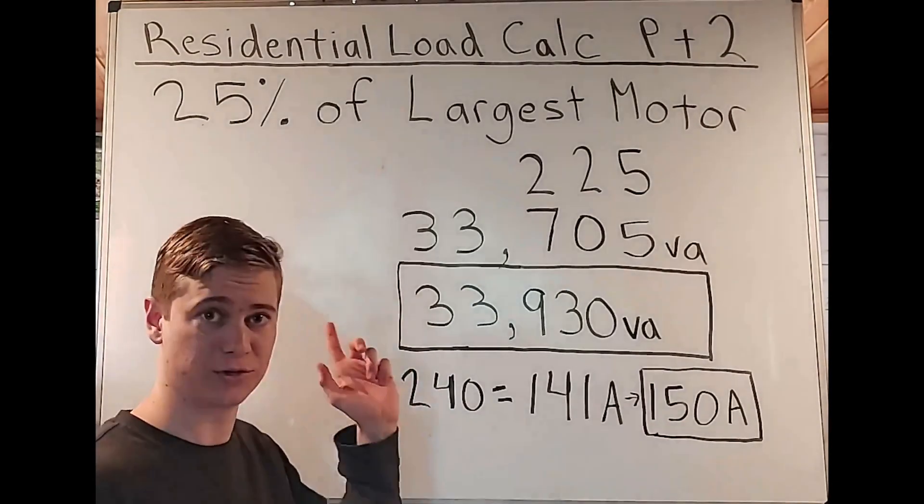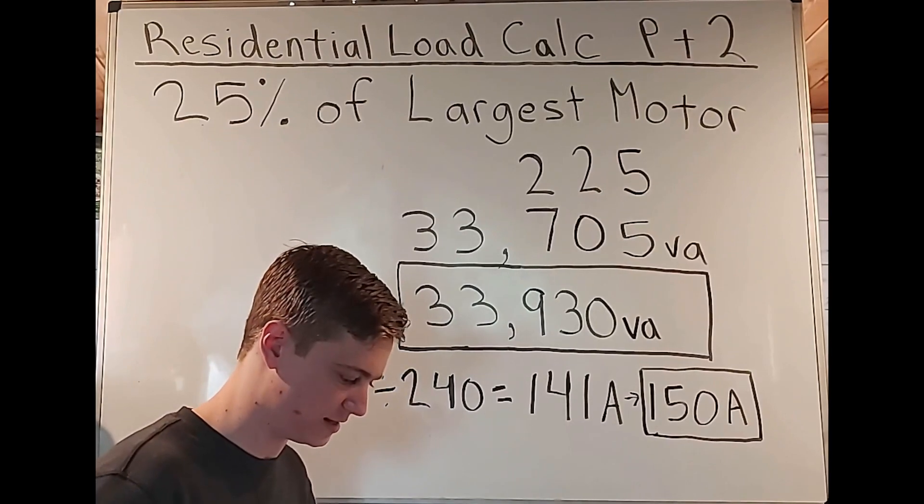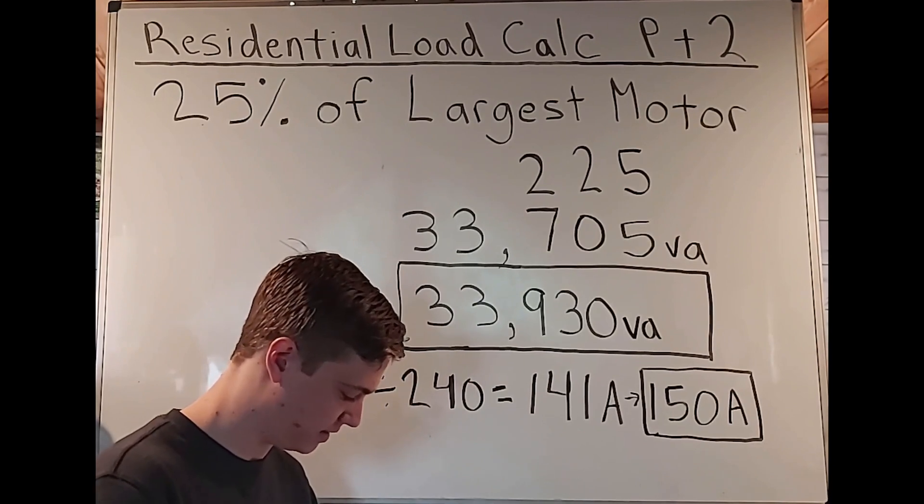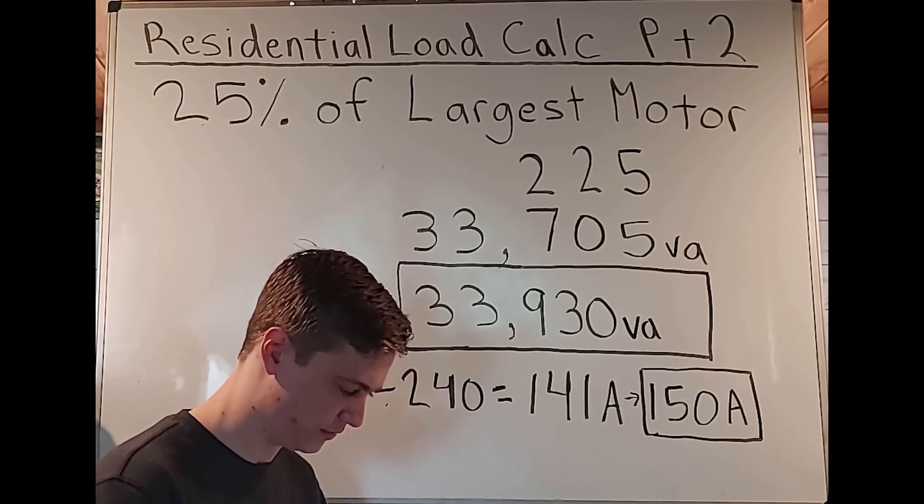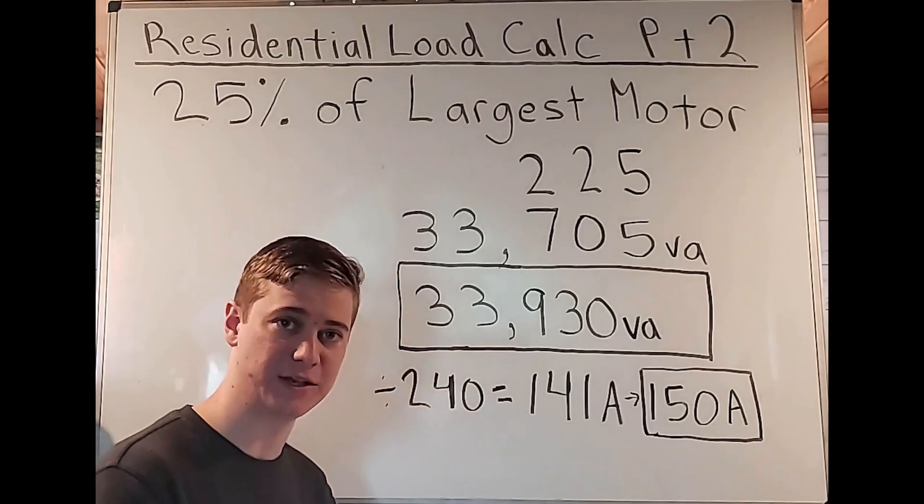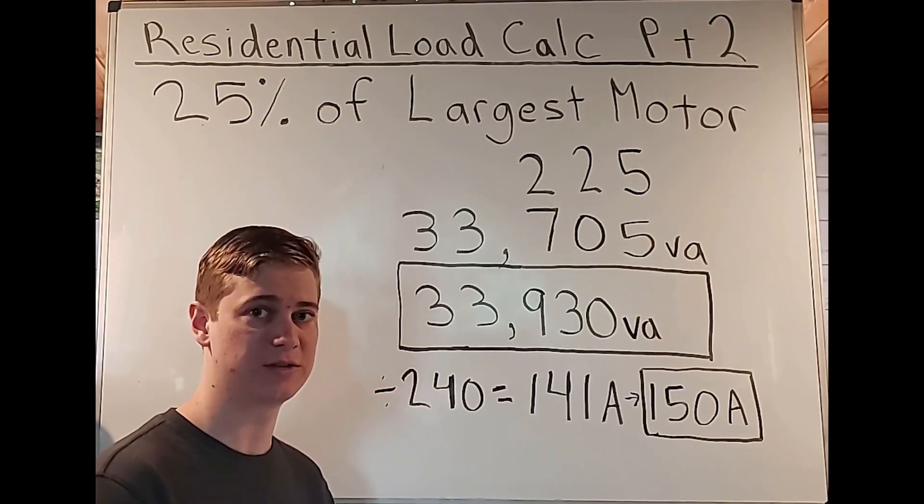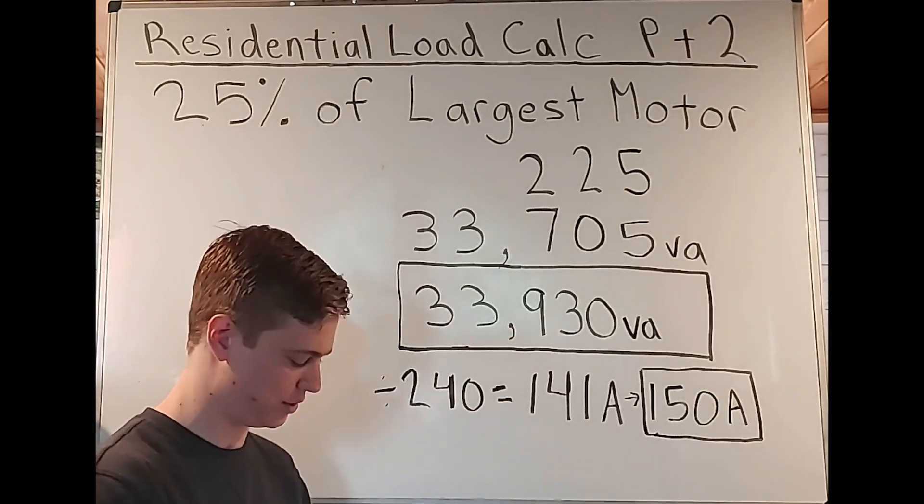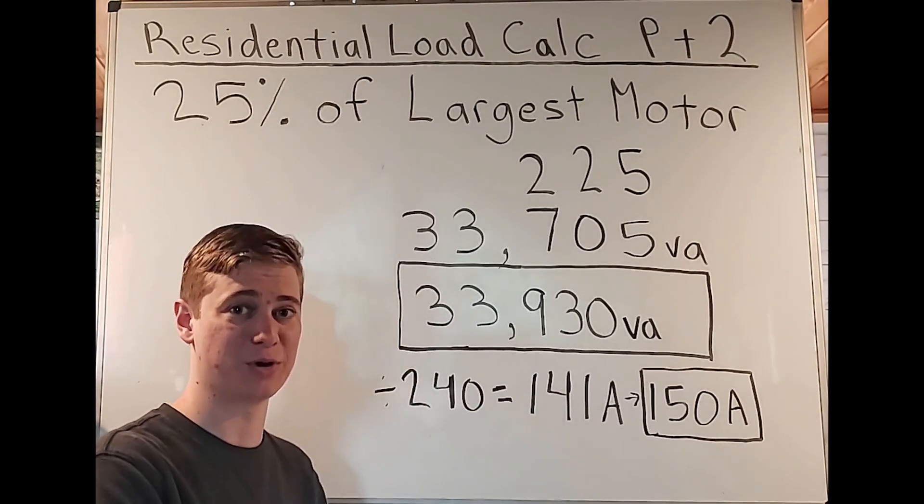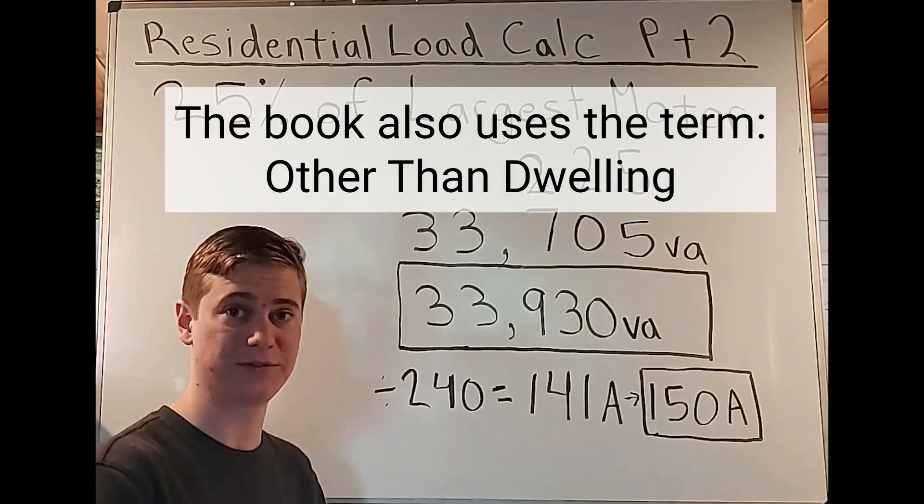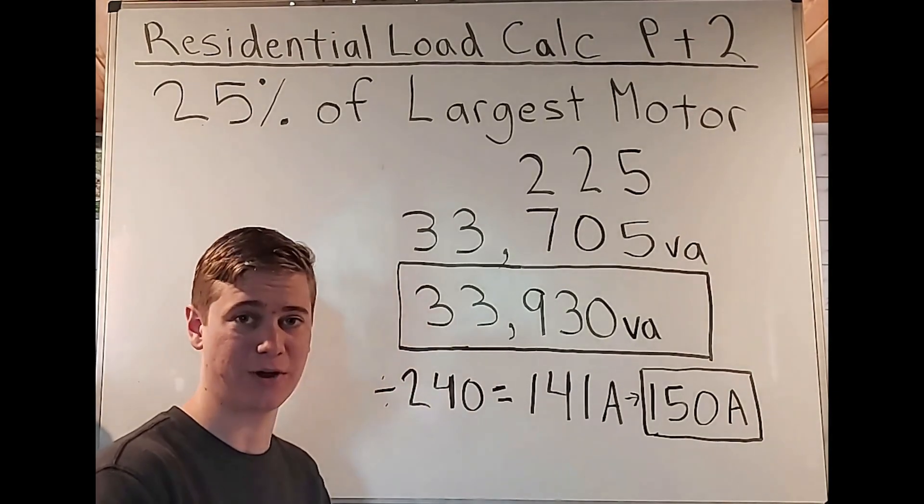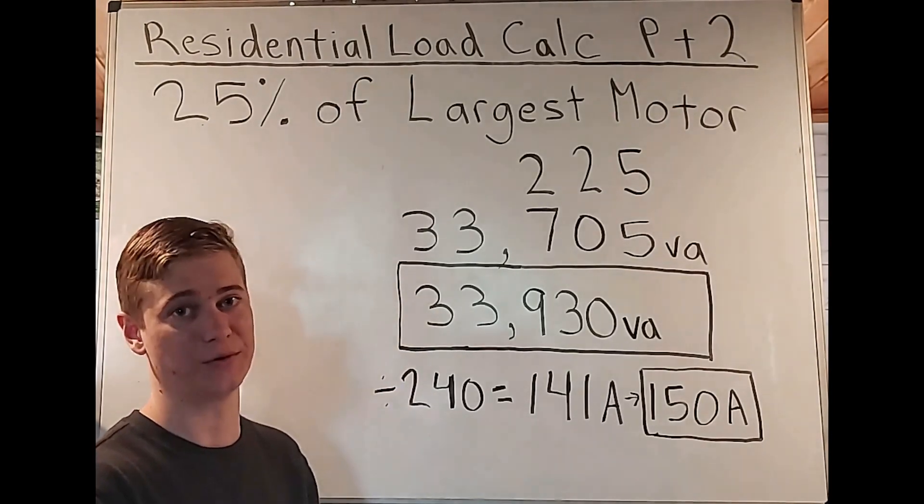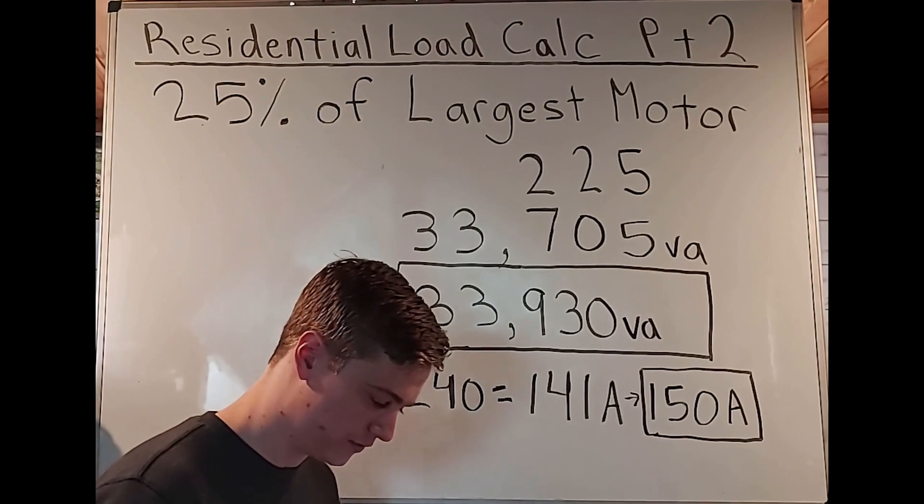Now when we're thinking about residential here, we're not going to be using table 310.16. That does tell us the ampacity of conductors. But if we go back to article 310.12, single phase dwelling services and feeders. So we see single phase, in other words, residential, you got to know some things in the code book when they're talking about houses, multifamily duplex or single, they're going to use the word dwelling. And if they're talking about commercial, which is not a dwelling, what you're often going to find is non dwelling. And along with that, you're often going to have single phase for your dwellings and you're going to have three phase for your commercial.